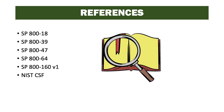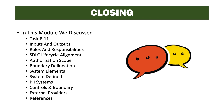References for this topic include Special Publications 818, 839, 847, 864, 800-160 Volume 1, and the NIST cybersecurity framework. In this module, we discussed Task P11, its inputs and outputs, roles and responsibilities, SDLC lifecycle alignment, authorization scope, boundary delineation, system elements, system defined, what we do with PII systems, controls and boundaries, and external providers.